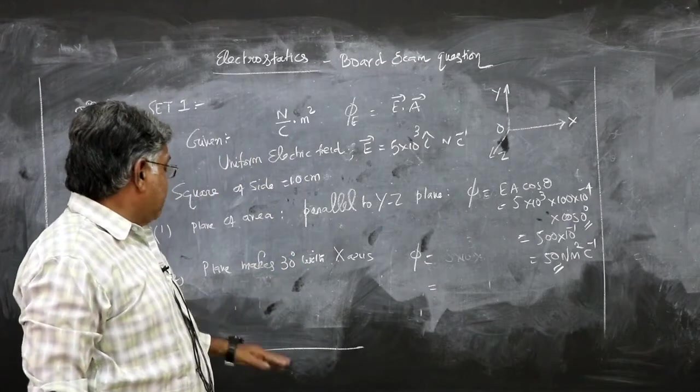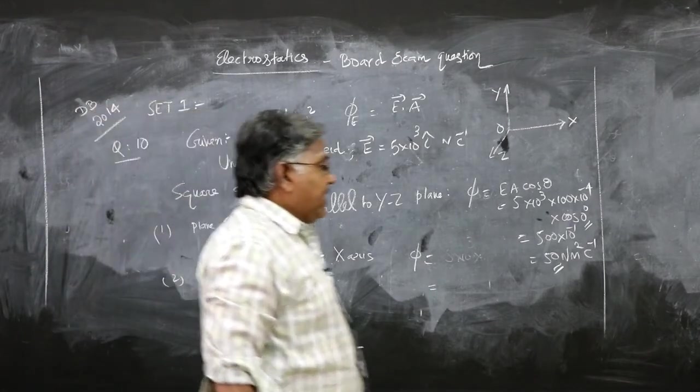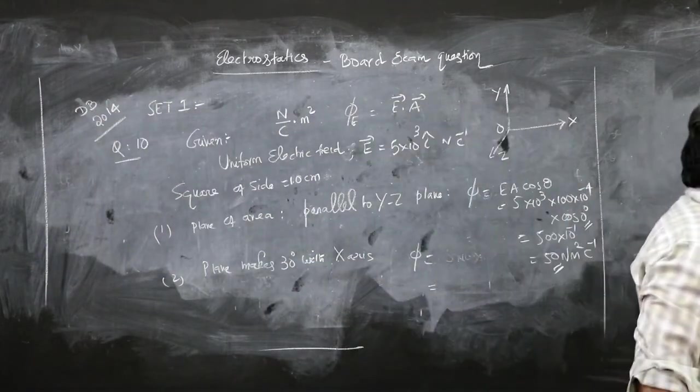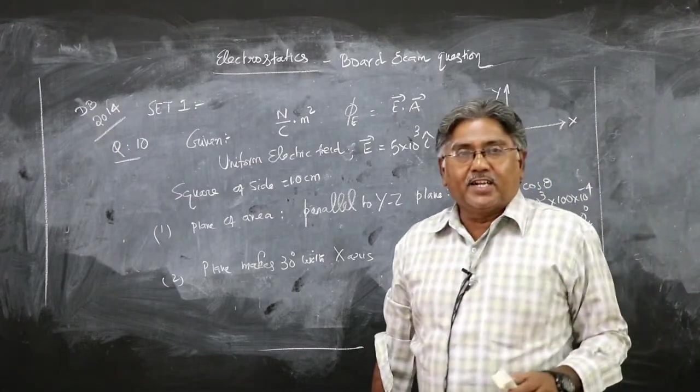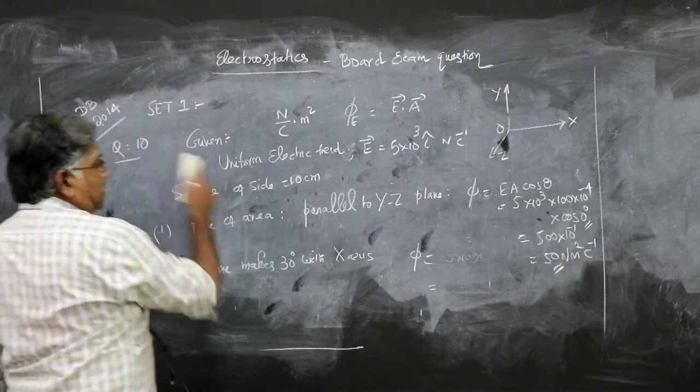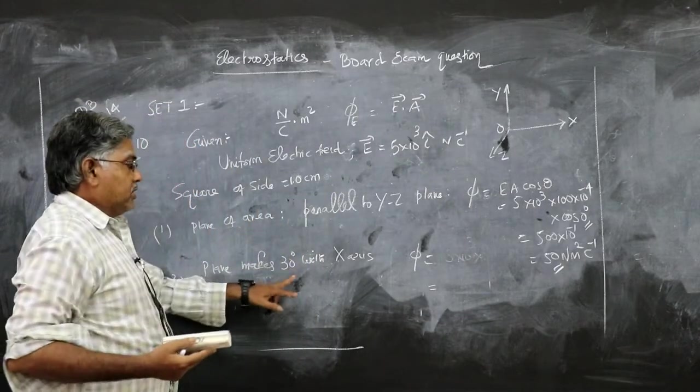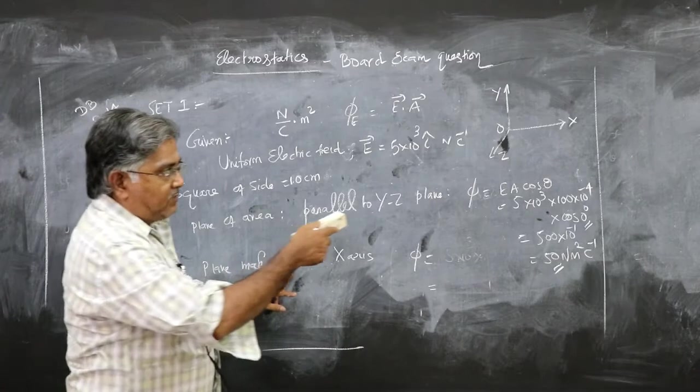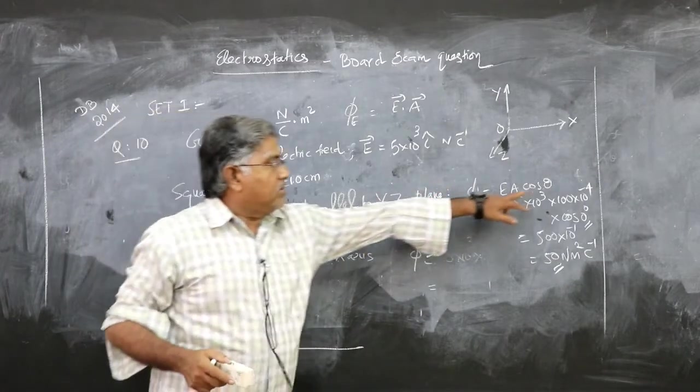In the second case, the plane makes 30 degrees with the x-axis. So how do you do that? This is a common mistake: you don't put 30 degrees in the formula in place of theta. If you put 30 degrees, it would be wrong. We will see why.